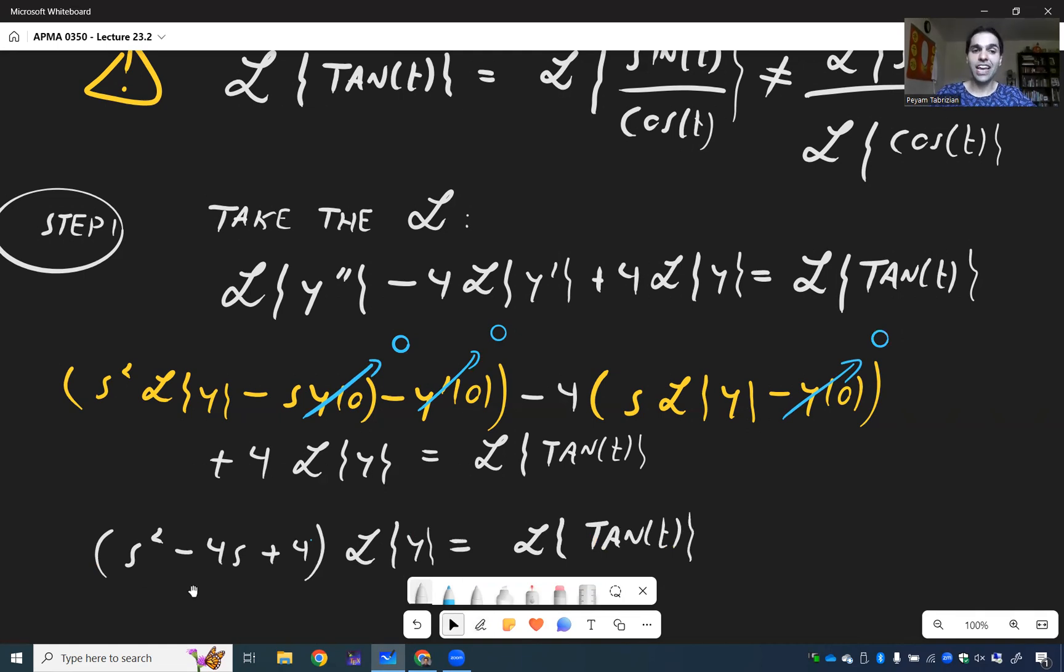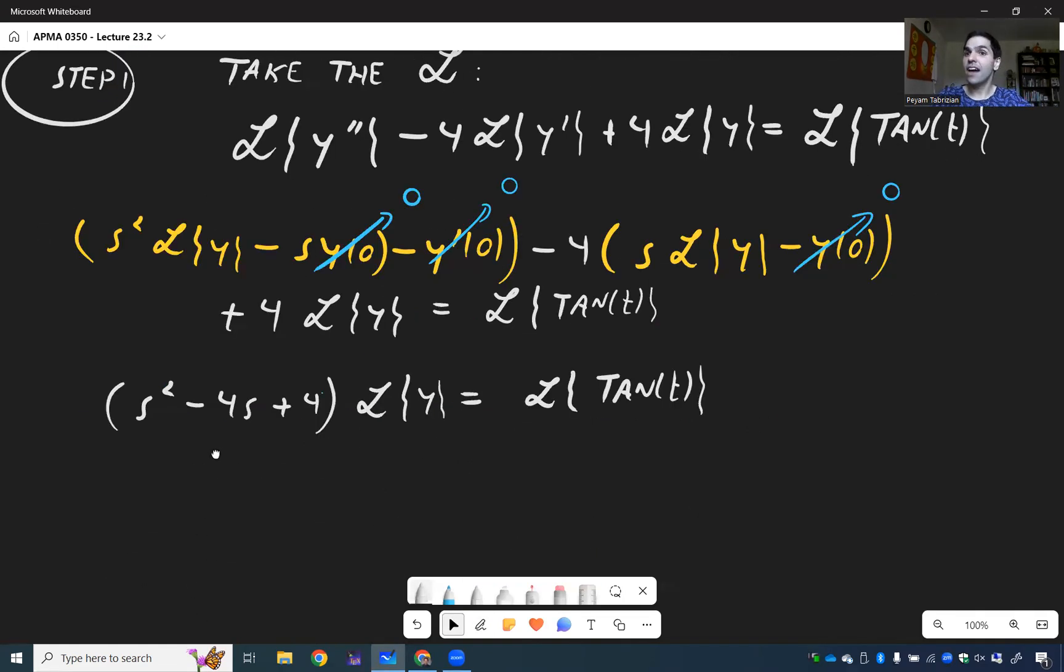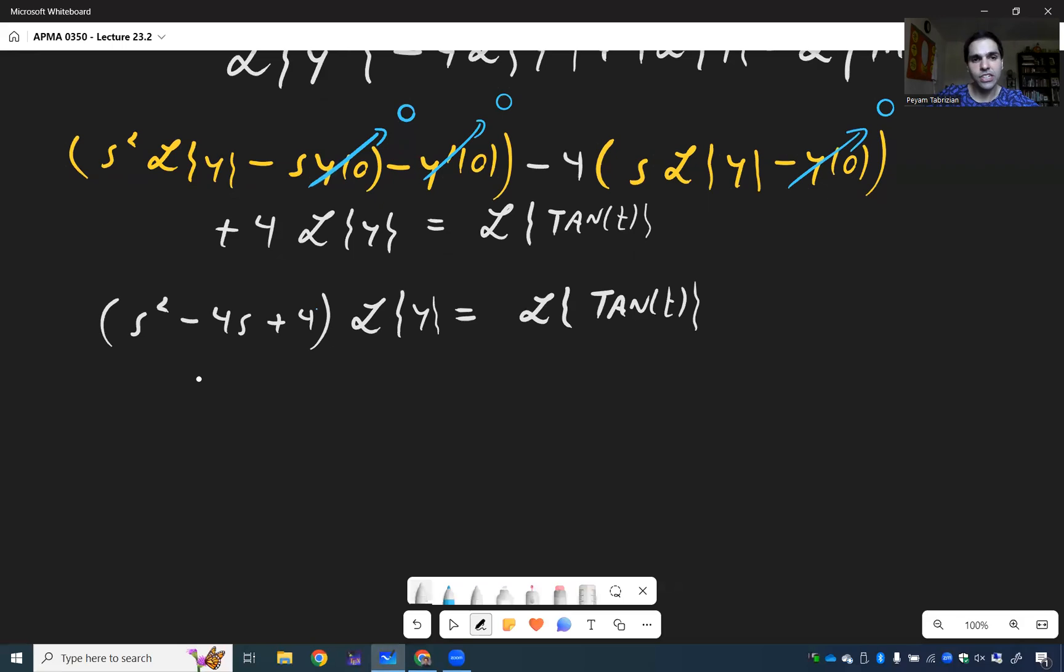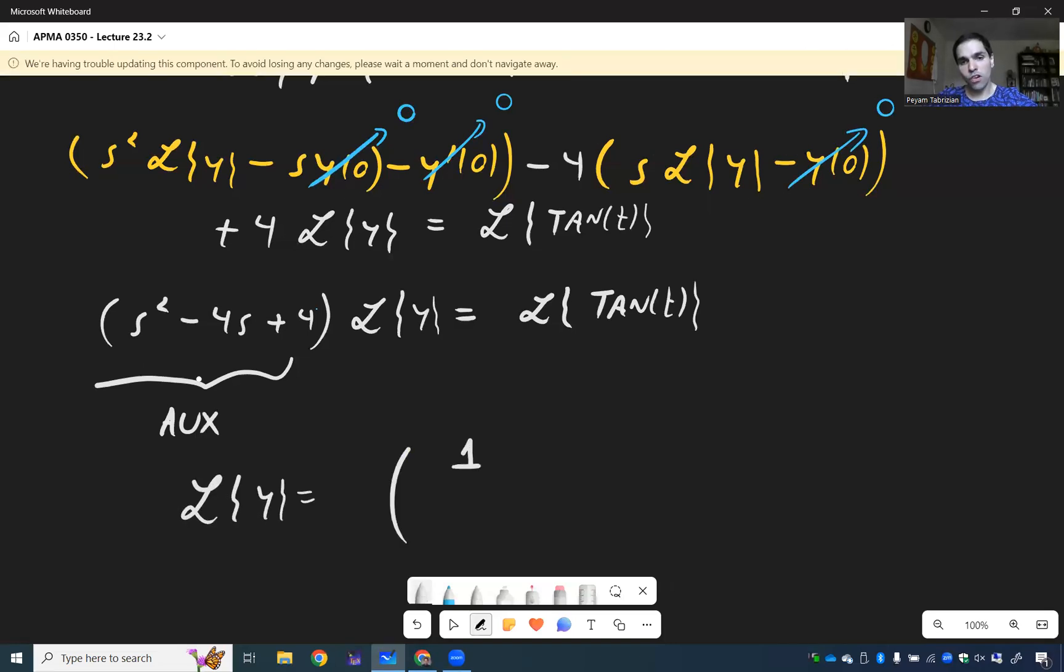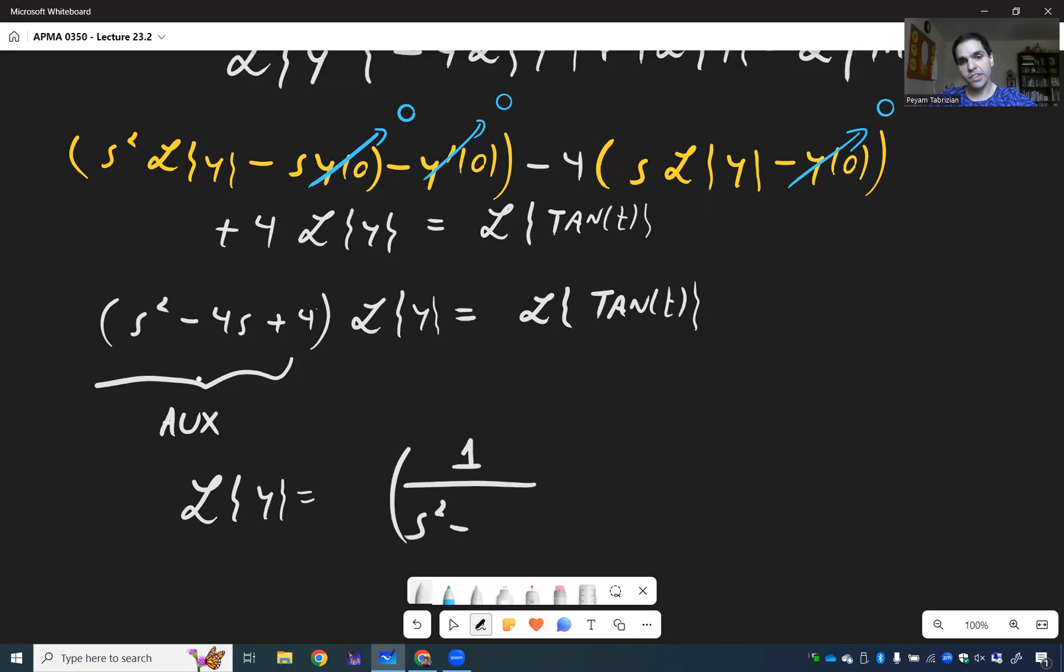Once again, sanity check, this left-hand side is the auxiliary equation. And then L of y is 1 over S squared minus 4S plus 4, Laplace of tangent of t.